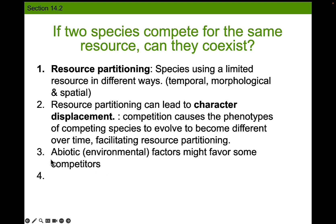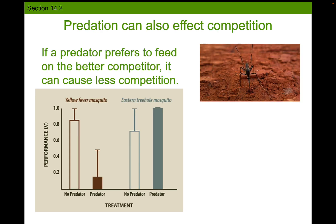This is an example of point three: sometimes environmental factors might favor one competitor over the other, and that might allow coexistence. Another way you can get coexistence is through predation — where the predator feeds on the better competitor, causing less competition. Looking at the yellow fever mosquito versus the eastern tree hole mosquito: with no predators, the yellow fever mosquito out-competes the other. But when a predator is present that prefers to eat yellow fever mosquitoes, the eastern tree hole mosquito is no longer out-competed. Predators or herbivores may limit the superior competitor and allow coexistence.